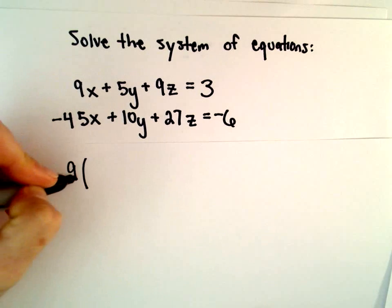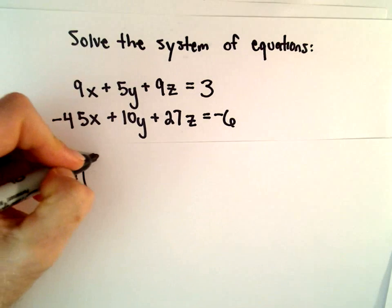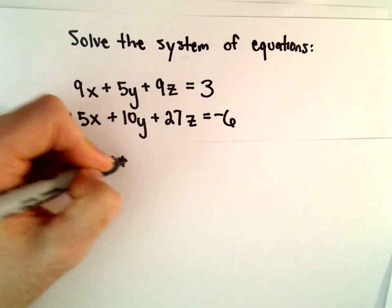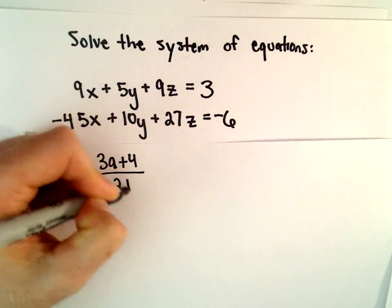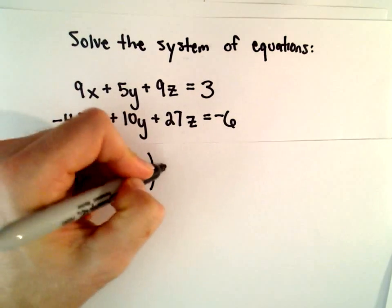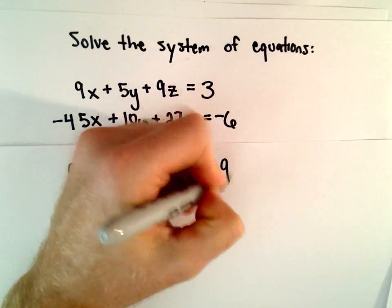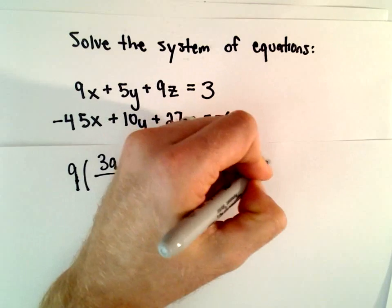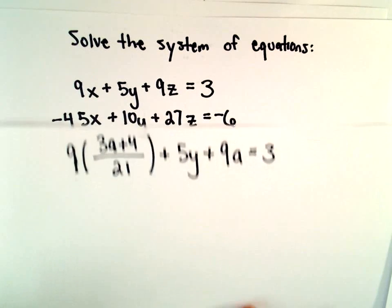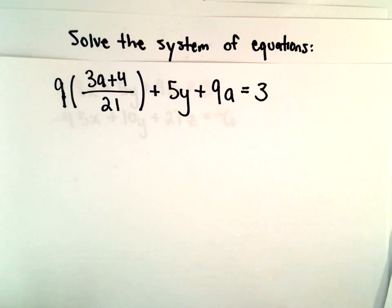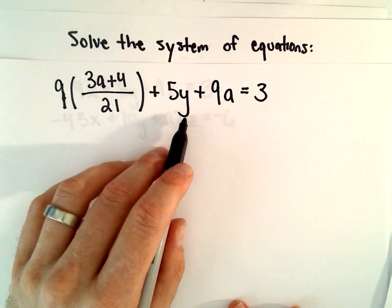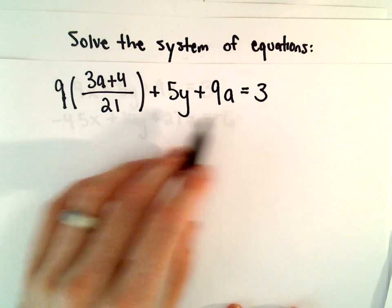So we have 9 times x. And x was equal to 3a plus 4 over 21, plus 5 times y plus 9 times z. But again, we're letting z equal a. So again, now it's just a matter of solving for y in terms of a.